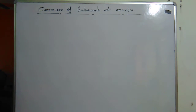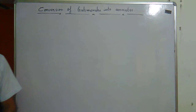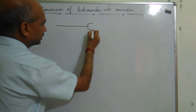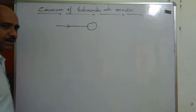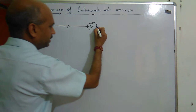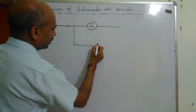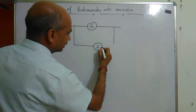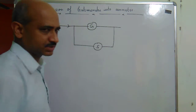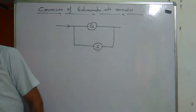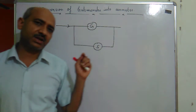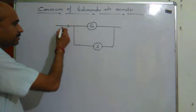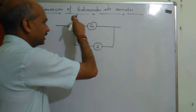The circuit is very simple. We have the galvanometer here, and we are connecting a shunt resistance S in parallel with the galvanometer. The current I comes here and we have to connect it with the galvanometer. You can see the current I flows in, and part of it flows through the galvanometer.